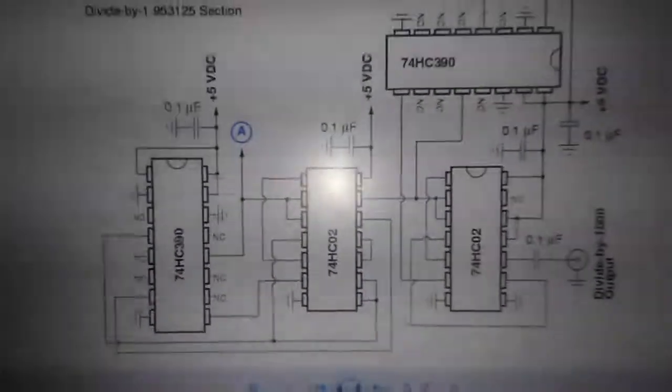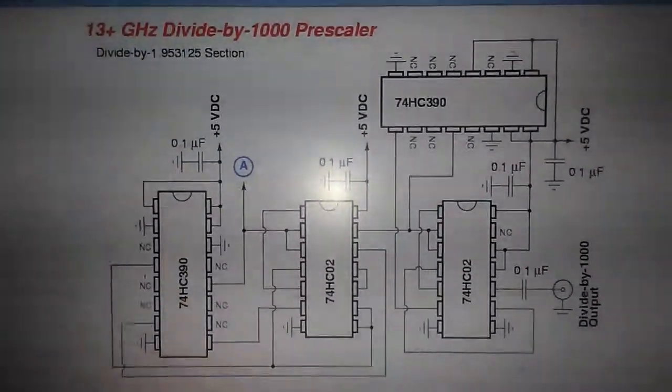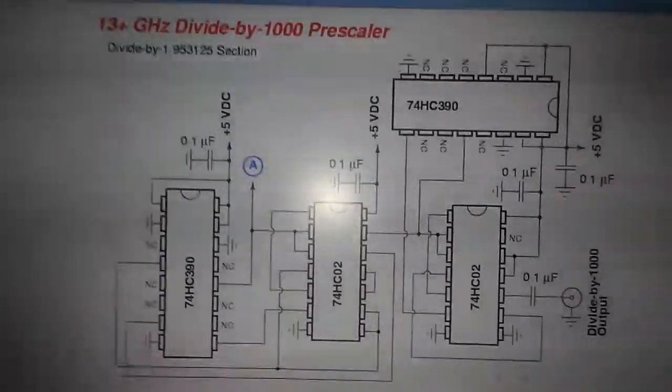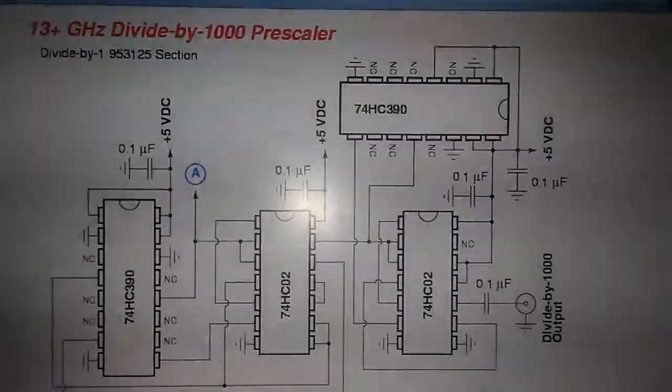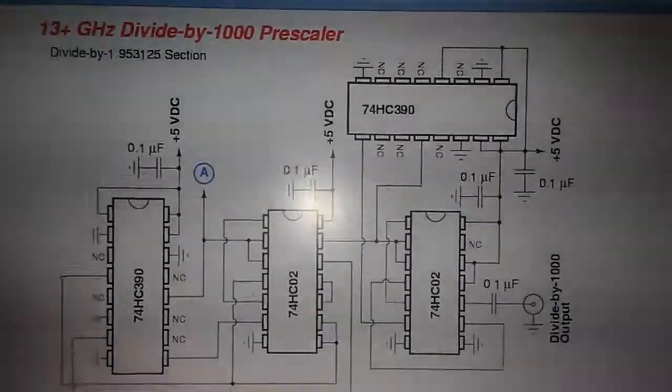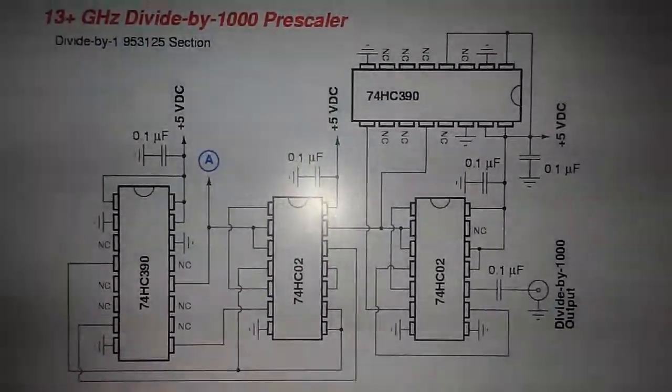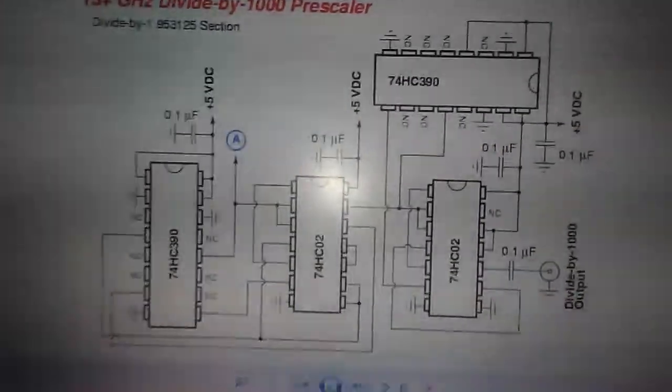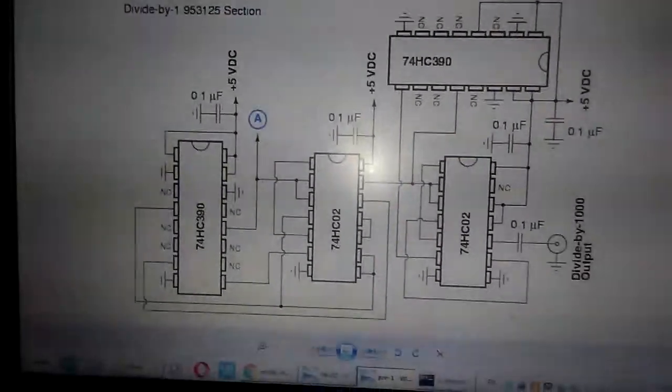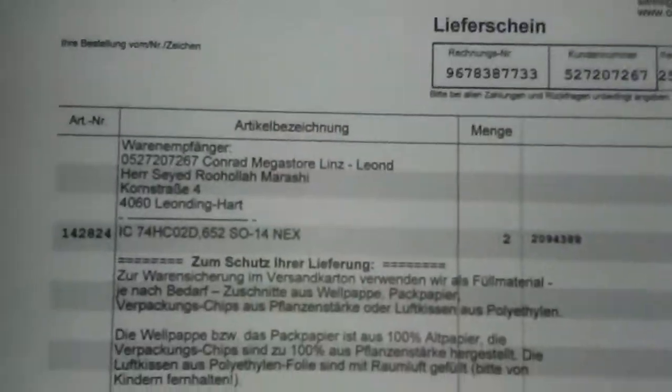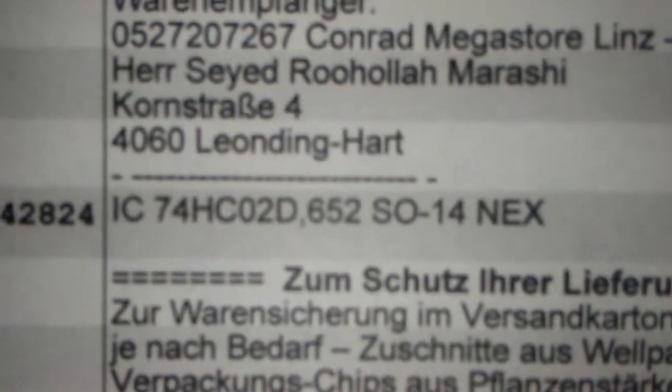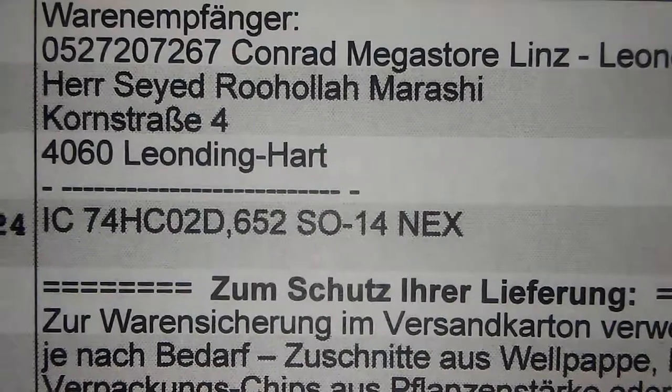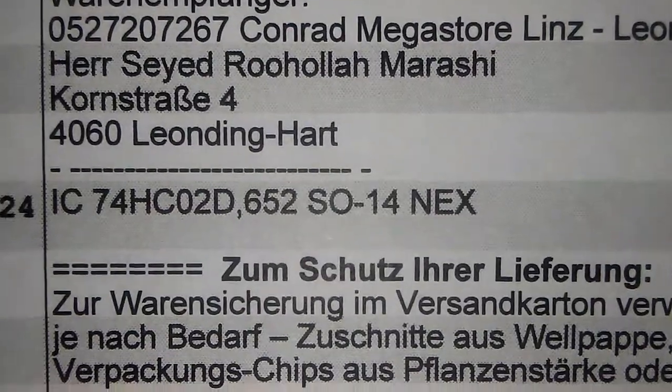The schematic uses CMOS 74HC390 ICs and two ICs of 74HC02. I did not find the DIP version, but I took the 74HC02 as SO14, the SMD version.